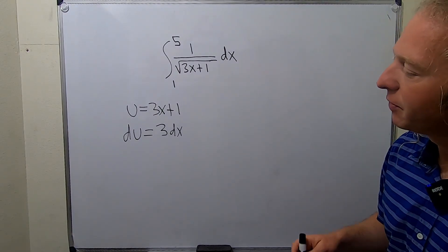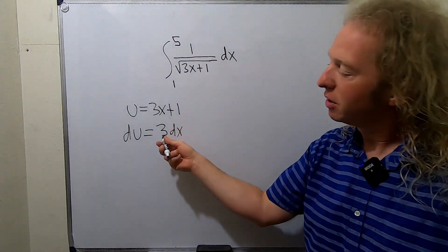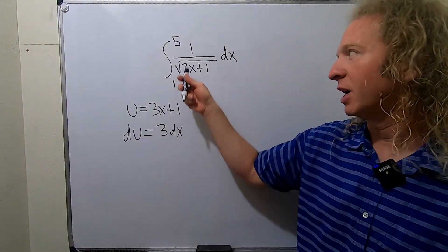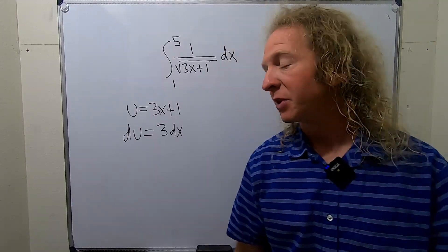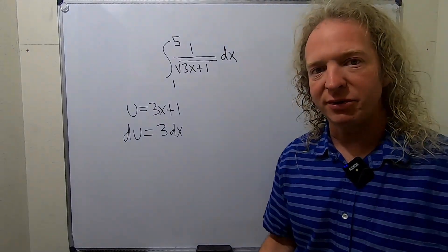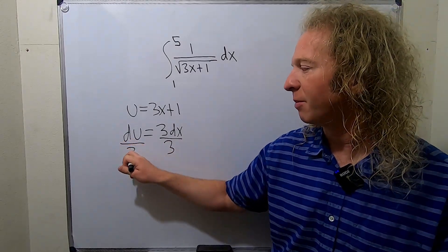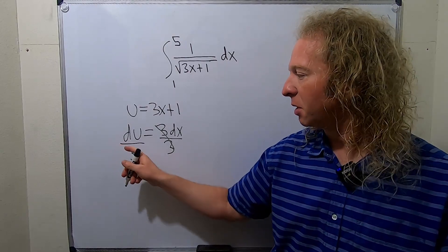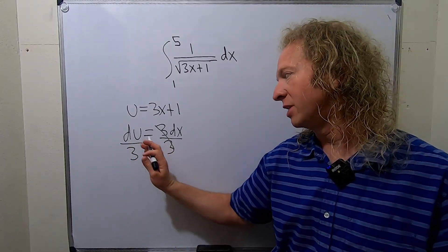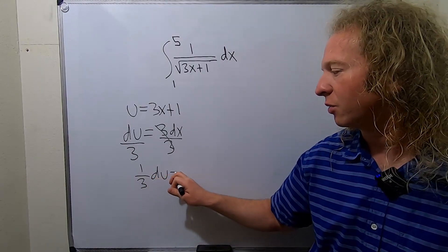Then when you get to this step, you're always supposed to make this look like this. So here we have 3dx and here we have 1dx, so we have to get rid of the 3. To do that we'll divide both sides by 3. So we end up with du over 3. Typically what we do at this point is write it like this: 1 third du equals dx.